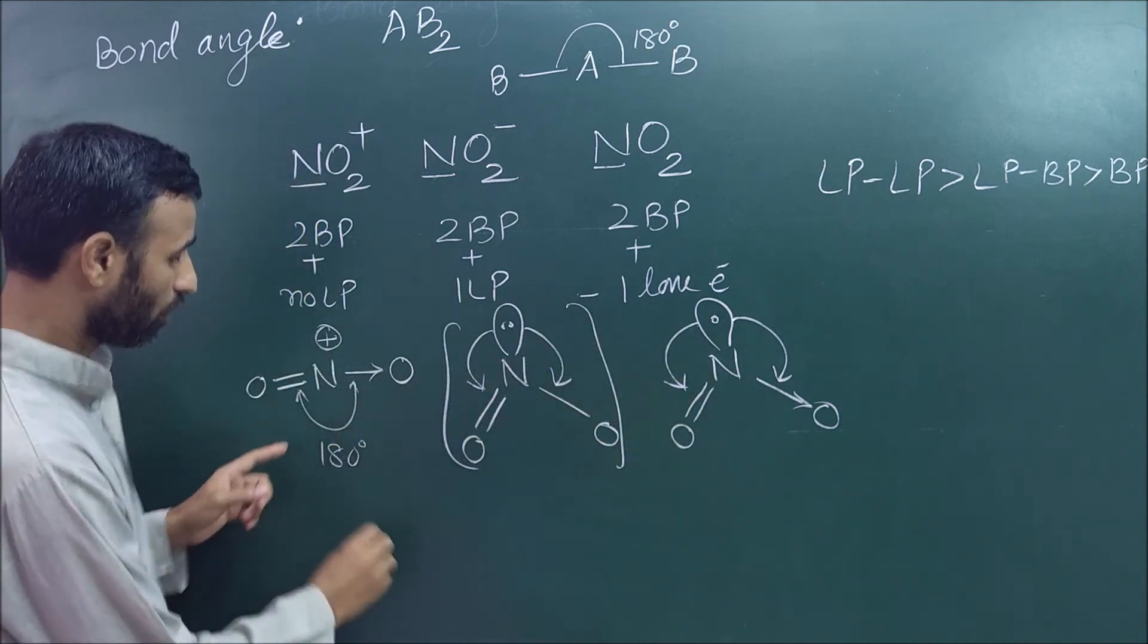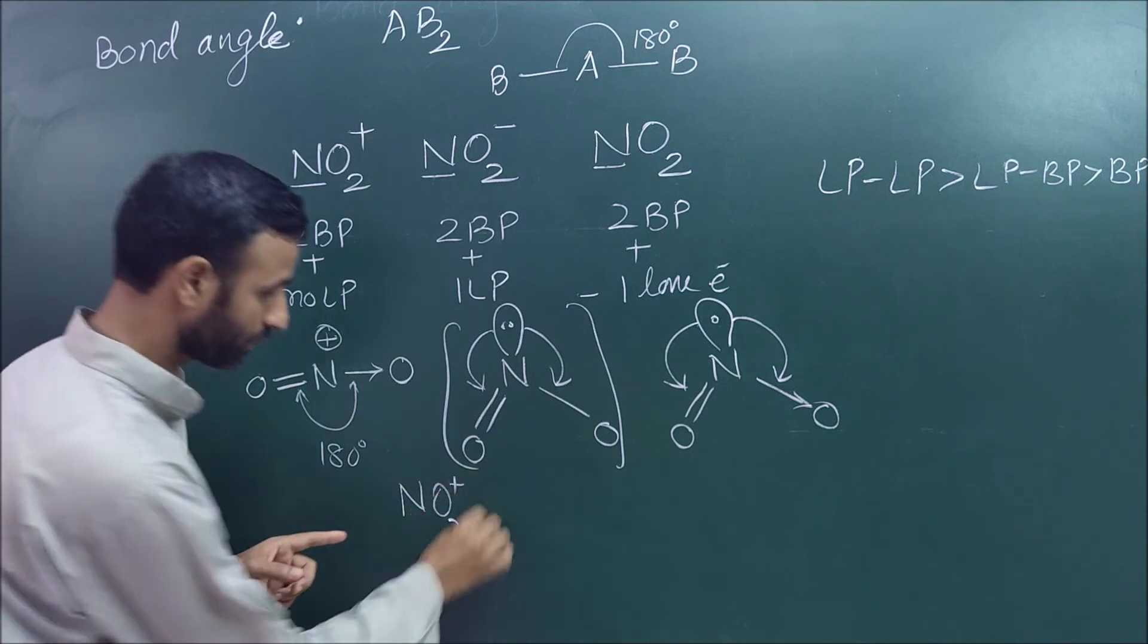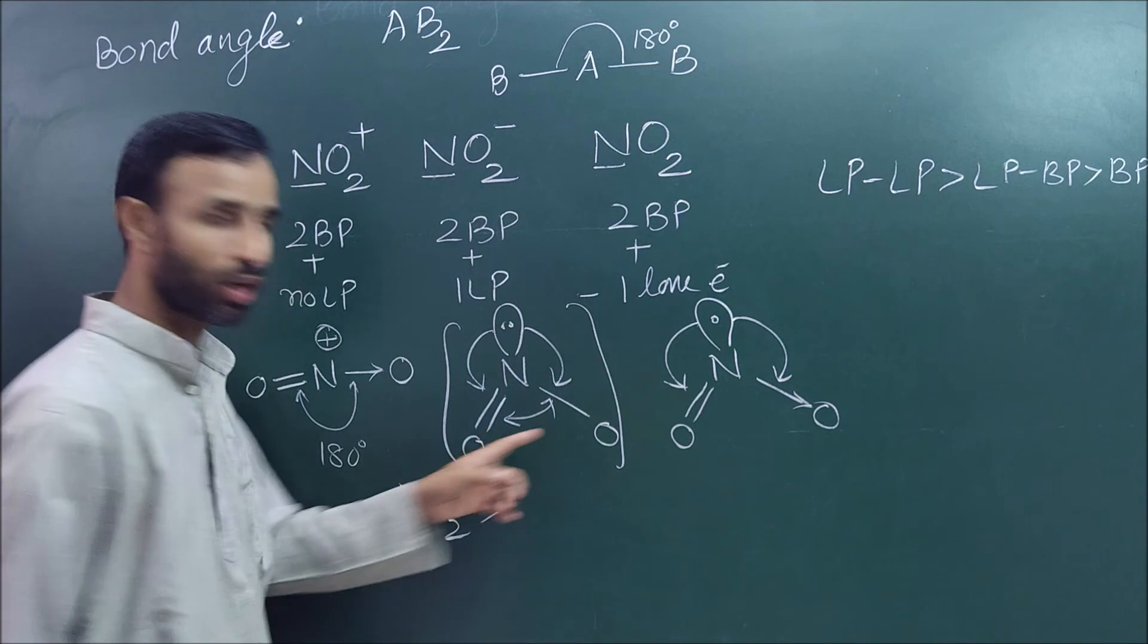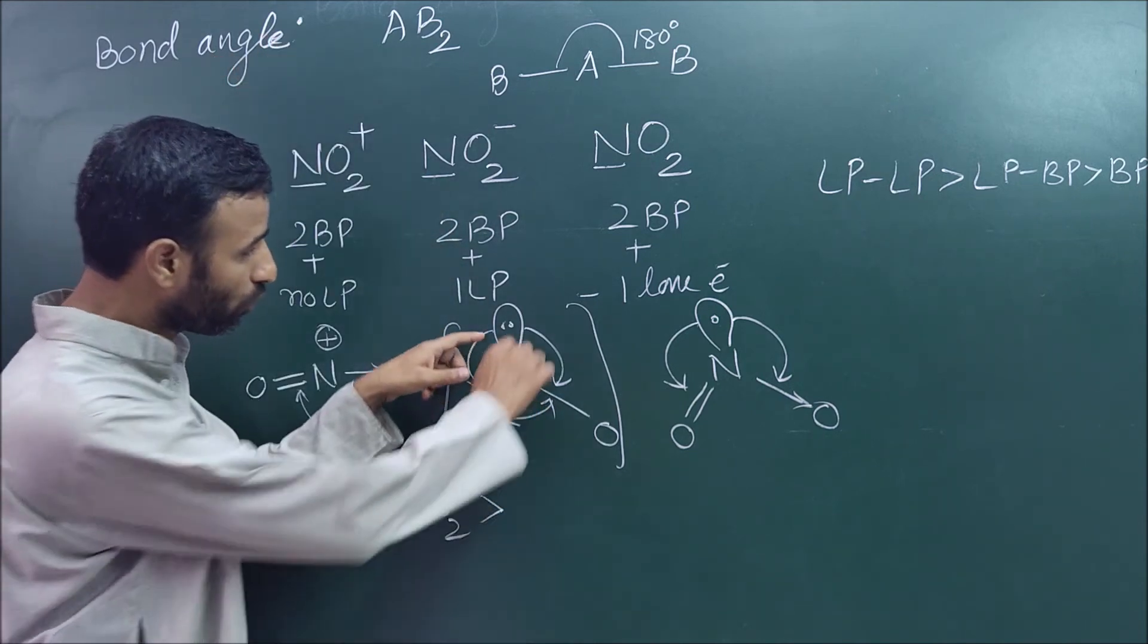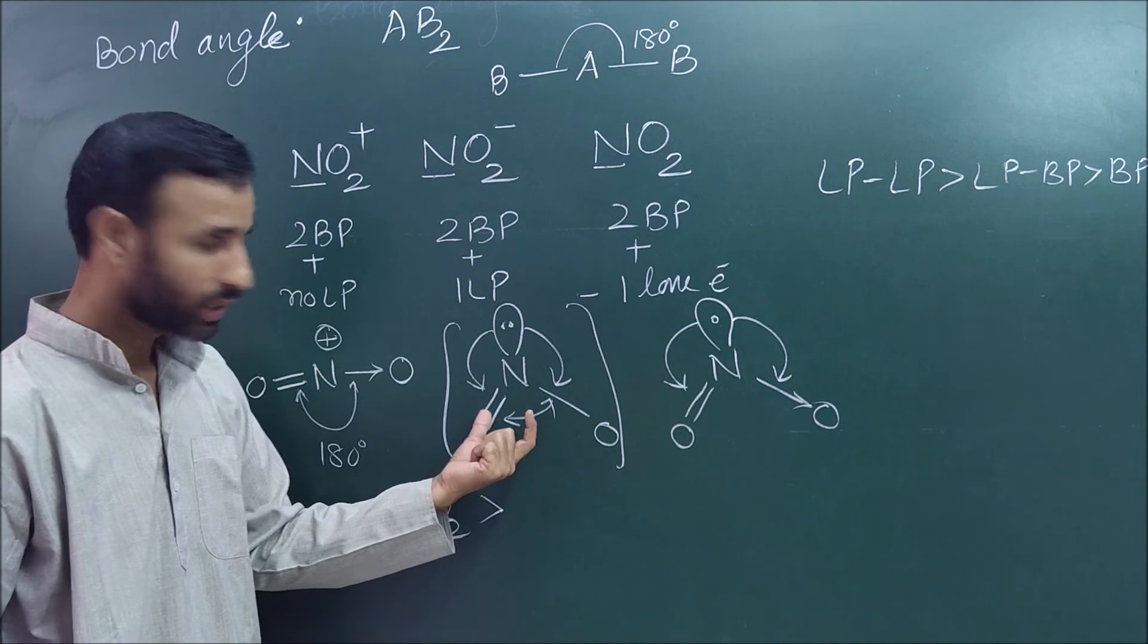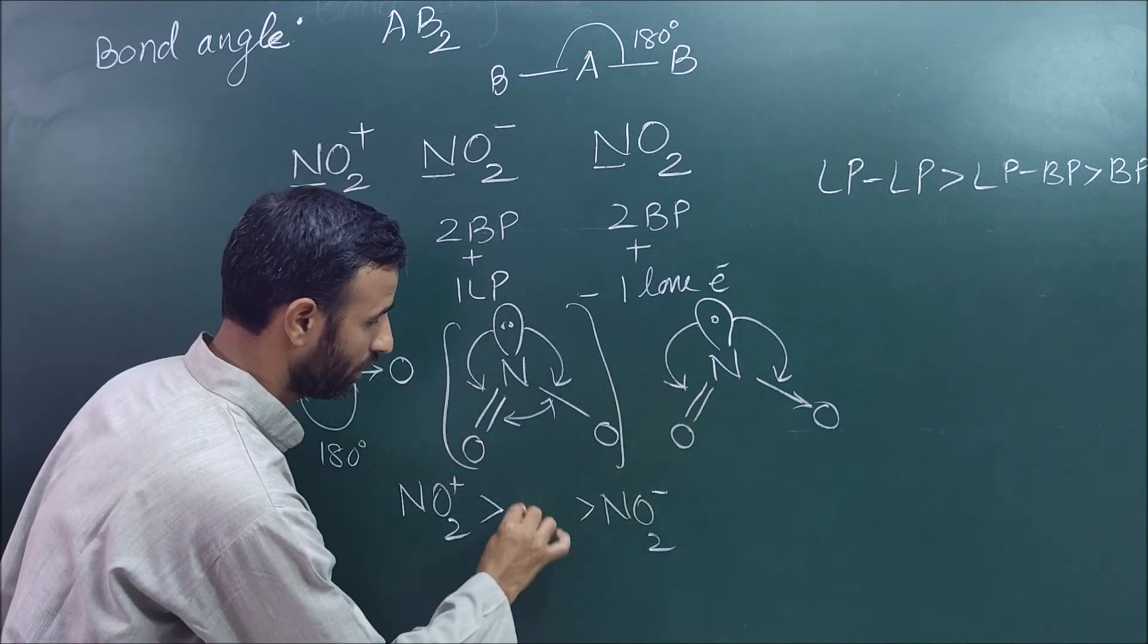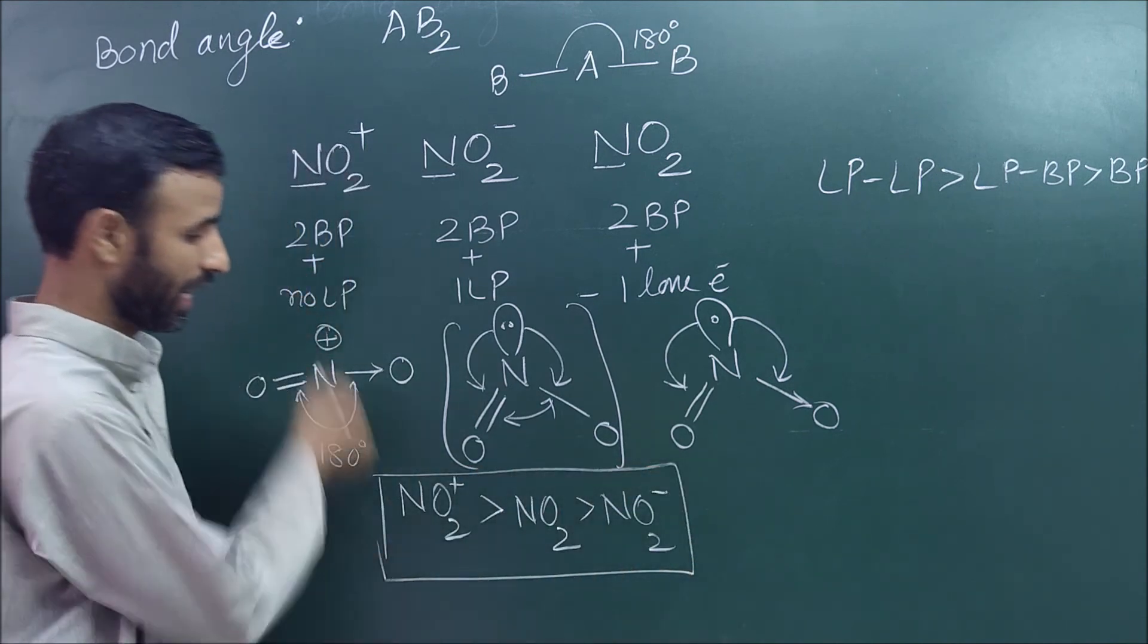That's why angle of NO2 positive is maximum. And out of these two, this has minimum bond angle because angle is seen between bond pairs. Bond angle is the angle between bond pairs. So when lone pair repels these bond pairs, bond pairs come closer. Repulsion here is more. That's why NO2 negative bond angle is minimum, and this is in the middle. So this is the order of bond angle.